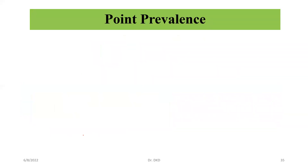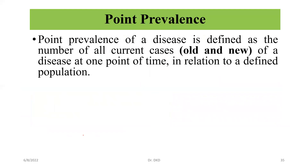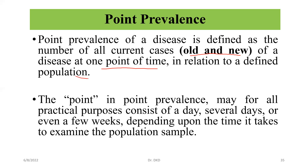Point prevalence of a disease is defined as the number of all current cases — old and new — of a disease at one point in time in relation to a defined population. In point prevalence, for all practical purposes, this may consist of a day, several days, or even a few weeks, depending upon the time it takes to examine the population sample.